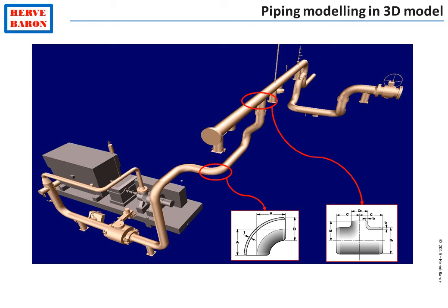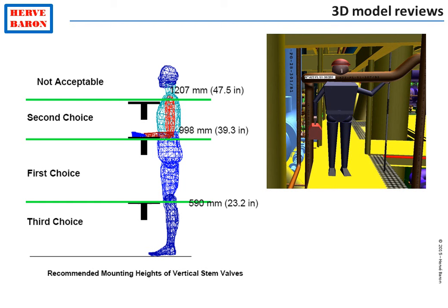Once a sufficient number of lines have been modeled in the 3D model — typically once 60% of them and then 90% of them have been modeled — a review of the 3D model is conducted with the client. These reviews mainly look at the access of the operator to all items: equipment, valves, and instruments. They also check that there is enough space around equipment for maintenance. Once the 90% model review is completed and comments are incorporated, piping drawings can be issued for construction.